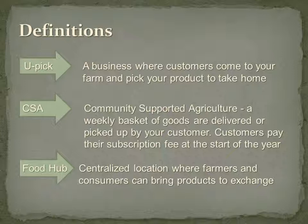A CSA is where your customer buys a subscription at the beginning of the year for a case, basket, or box of food to be delivered or picked up on the farm once a week. This is a nice system that spreads the risk between the consumer and the producer and also allows the farmer to get some capital at the beginning of the season. A food hub is a centralized location where farmers can bring their produce and people can come in and buy from several different farmers in one location, so the food hub represents the sellers and provides a place for buyers.